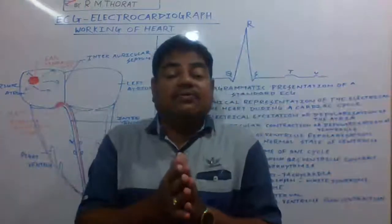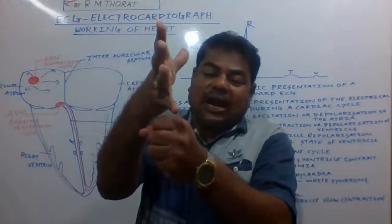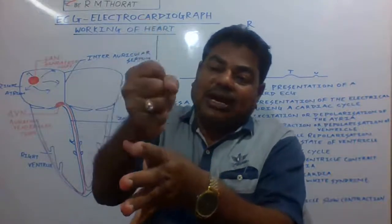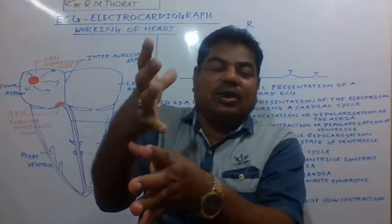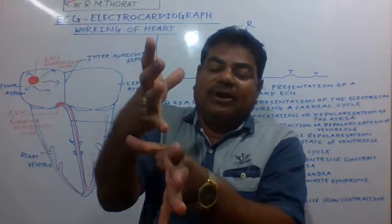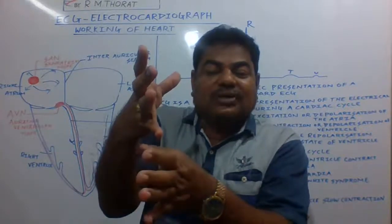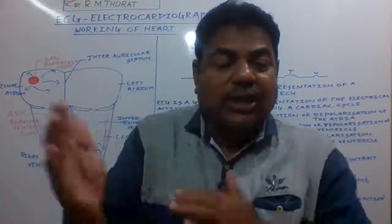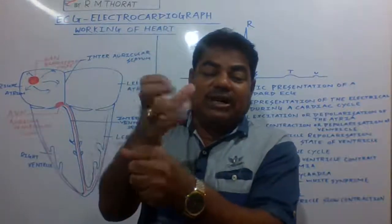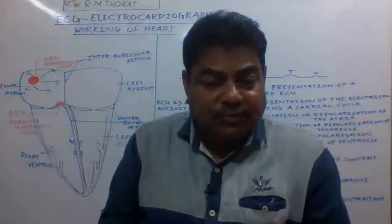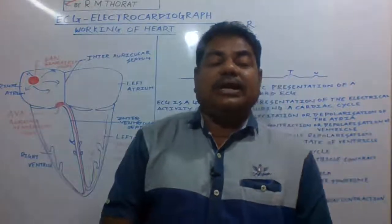In this way the heart functions. The auricle gets contract and relax, and the ventricle gets contract and relax. When the auricle contracts, that is auricular systole, and when it relaxes, we call it auricular diastole. When the ventricle contracts, that is ventricular systole, and when it relaxes, that is ventricular diastole. Due to this rhythmic contraction and relaxation between auricles and ventricles, a cycle is set up — we call it the cardiac cycle — in which blood is pumped.